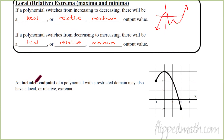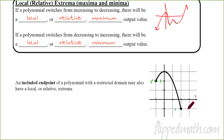A question that comes up: if a function's domain is restricted, do you include an endpoint as a local minimum? Based on our definition, yes — an endpoint can be a local minimum because in the local area, it is the smallest value close to it. This restricted function has two local minimums and one local maximum.